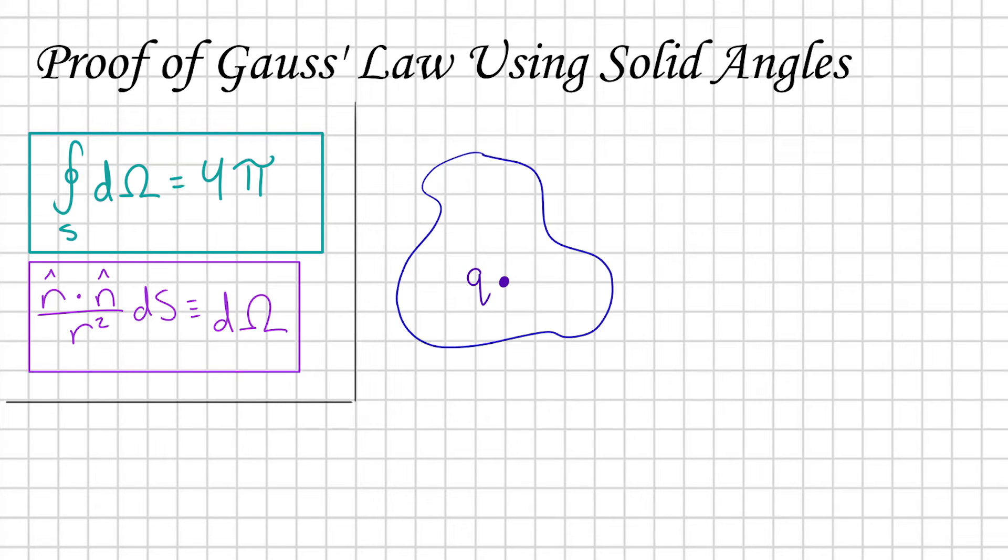Imagine that I have an arbitrary closed surface S, and I put a charge Q inside that surface. We want to find the expression for the electric flux through our surface S. Or in other words, how much do the electric field lines produced by Q push either out or in on the surface?